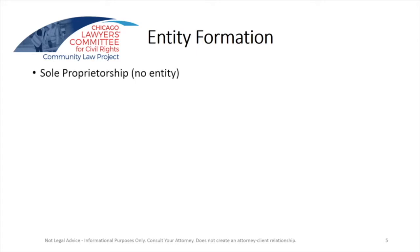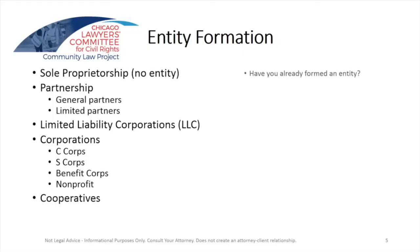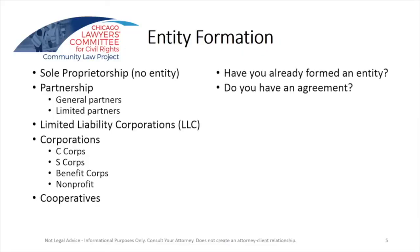Again: sole proprietorship, partnership — you have general partners, limited partners, limited partnerships — LLCs, different kinds of corporations, and then cooperatives. Another thing to think about is where you are now in your business plan. If you're at the concept stage, you may not need an entity right now. If you already have operations, then you want to think about what sort of legal entity you want to hold your business in. Do you have agreements in place already? If you've already contracted to provide services individually, then it may not make sense to form an LLC at this time — you'll have to assign those contracts.